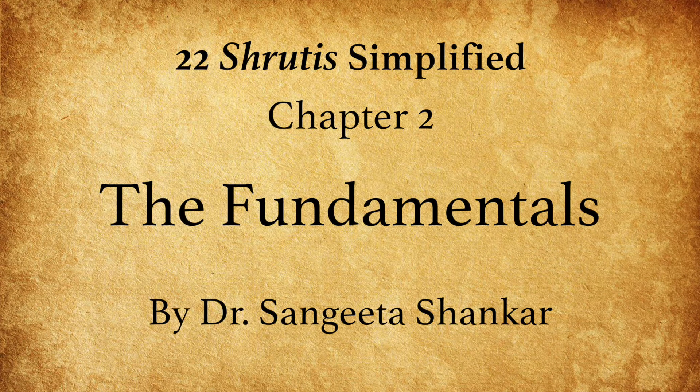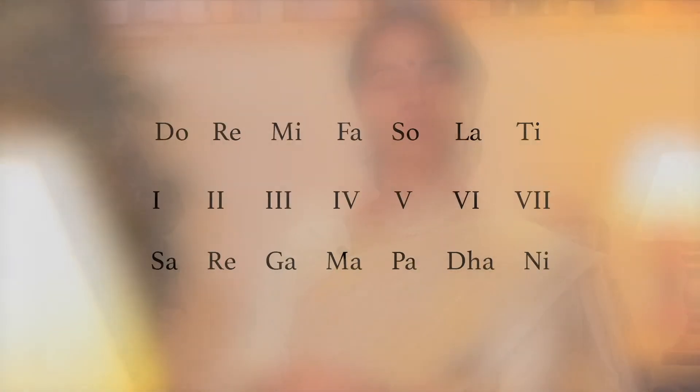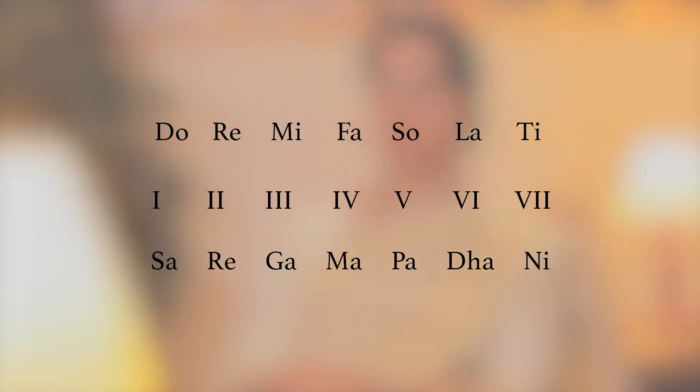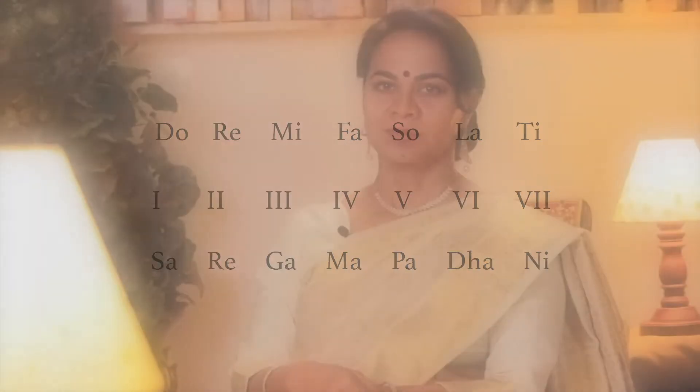Here is the ancient knowledge of the Indian 22 Shrutis. We all know the basic 7 notes — C D E F, Do Re Mi Fa, written as the Roman 1 2 3 4 and in India as Sa Re Ga Ma Pa Dha Ni. We also know the varieties of the 12 notes. Now Shrutis are a further expansion of the 12 notes.